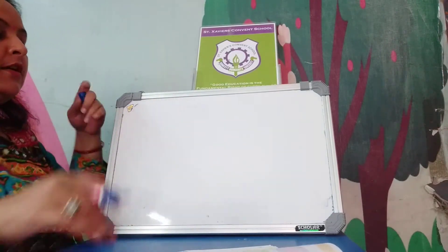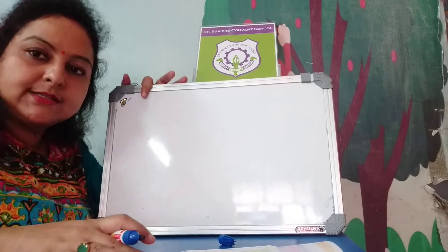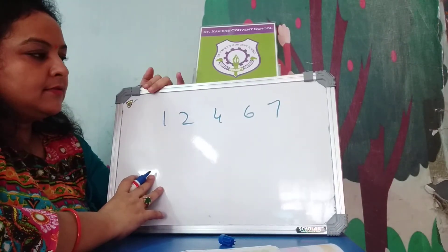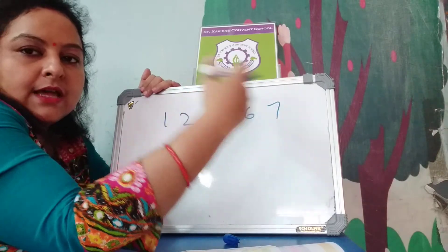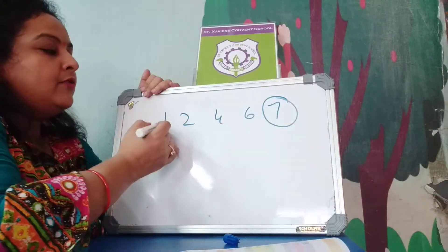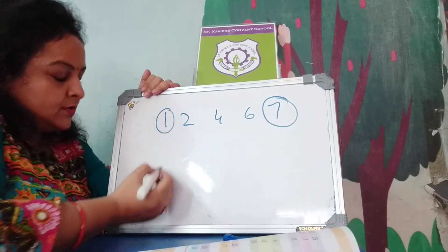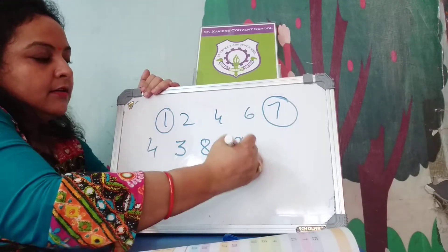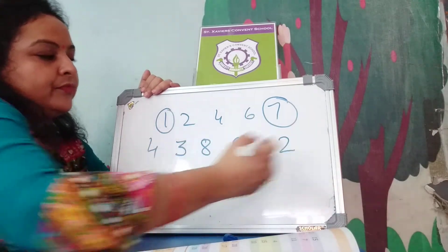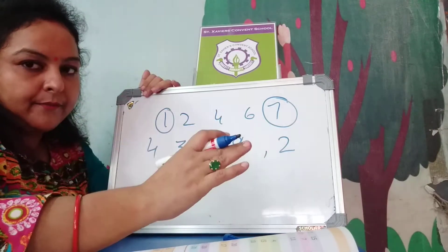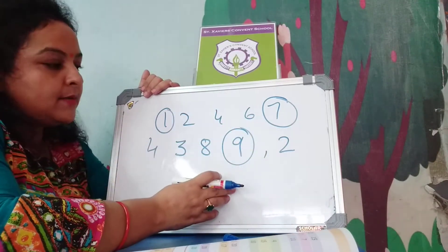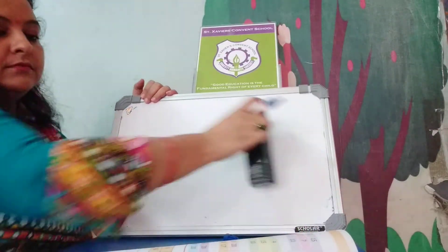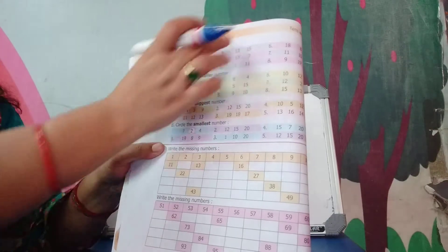And biggest and smallest — if you have more than 2 numbers, you will compare with biggest and smallest. Suppose: 1, 2, 4, 6, 7. Which number is biggest? 7 comes last, so this is the biggest number. And 1 comes first, so this is the smallest number. Another example: 3, 8, 4, 9, 2. 9 is the biggest number because it comes last. And 2 is the smallest number because it comes first. You have to circle the bigger, smaller, biggest, smallest in these exercises.